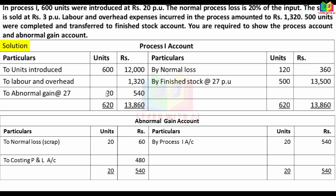We transfer the normal loss rate of Rs.3 per unit to balance the abnormal gain account — crediting the abnormal gain account with 20 units at Rs.3 to reflect the scrap value foregone. This completes the abnormal gain account.